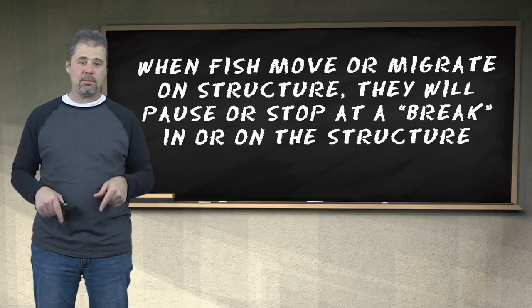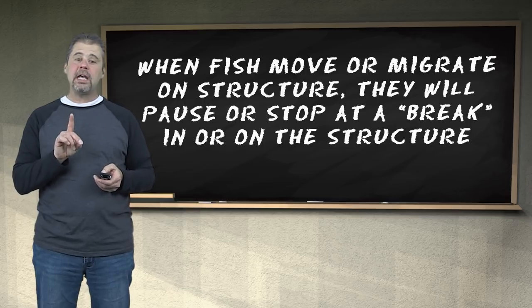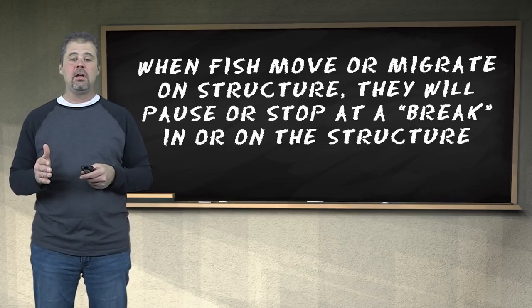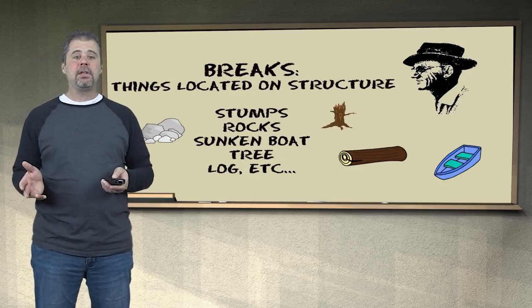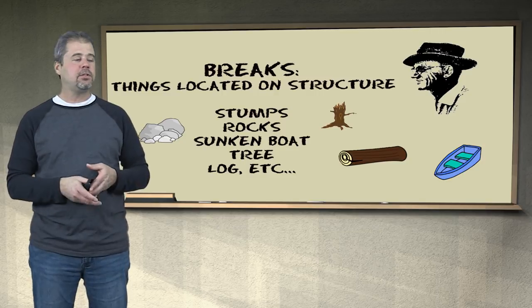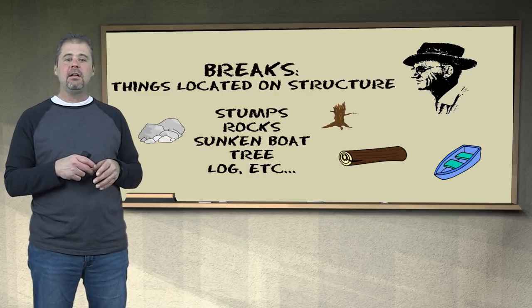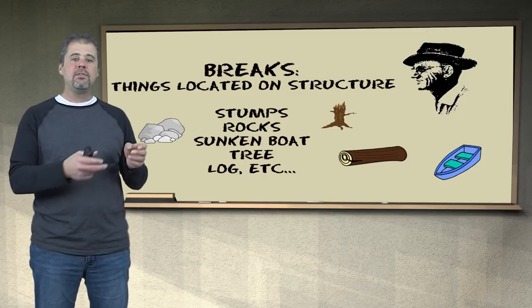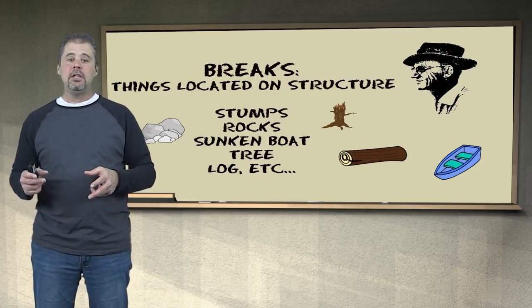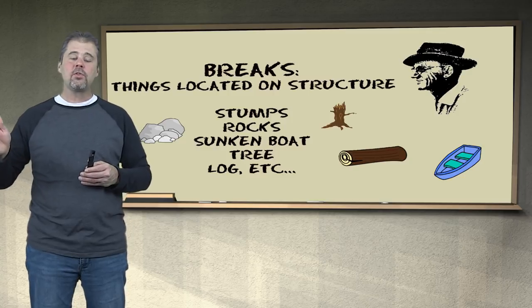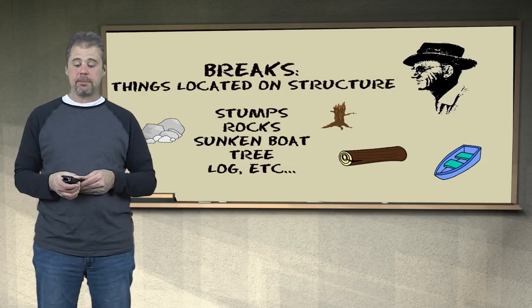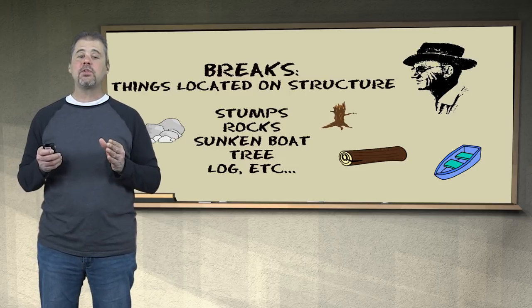Breaks are things that are found on the bottom. If these breaks are located on structure, then the fish may use them when they migrate on structure — and it could be worth fishing. But if you take that stump and put it way up on a flat, it's just a stump. You take a pile of rocks and put it way up on a flat — it's not on structure. But if you take this stump and this pile of rocks — these breaks — and put them on structure, associated close to the break line where the fish can see them, then these breaks are going to be worthwhile fishing.